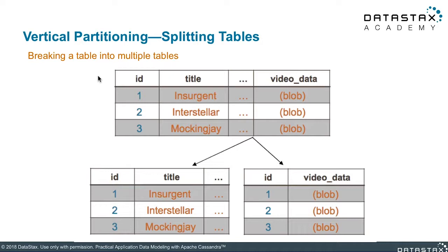In this example, users will query for video metadata more often than watching the video itself. We split the video streaming data to its own table, so our application does not unnecessarily pull it when displaying just the title, tags, and other columns. Depending on your queries, you may need to adjust the primary key when you split a table.